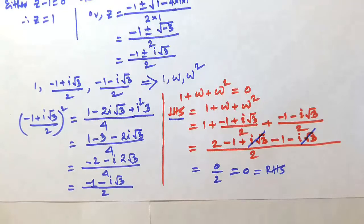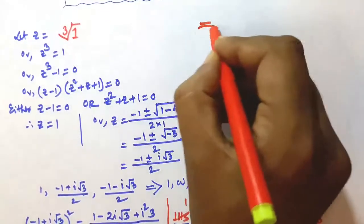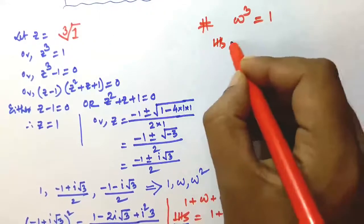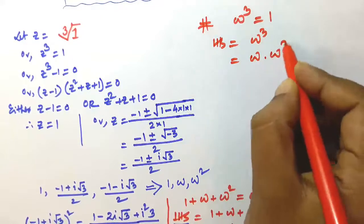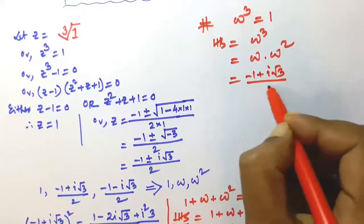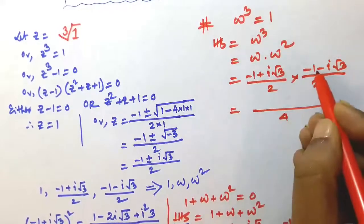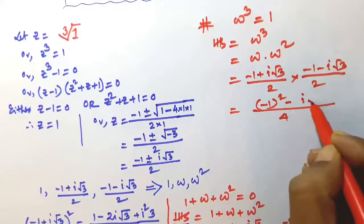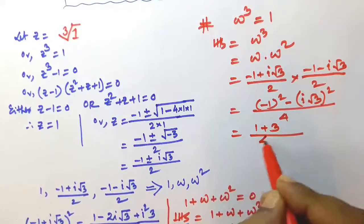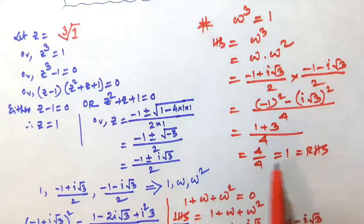The next property is that the product of all the cube roots of unity is equal to 1, that is omega cubed equals 1. To verify: omega times omega squared equals minus 1 plus i root 3 over 2 into minus 1 minus i root 3 over 2, which is minus 1 whole squared minus i root 3 whole squared, all over 4, equal to 1 plus 3 over 4, which is 4 over 4 equal to 1. Therefore omega cubed is equal to 1.